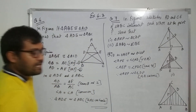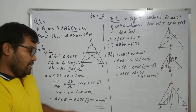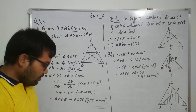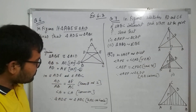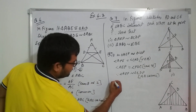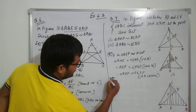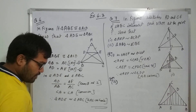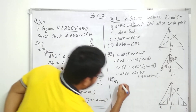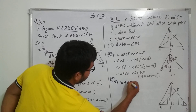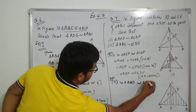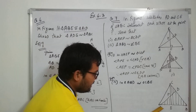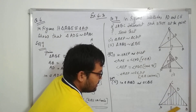I hope you have understood Roman numeral 1. For Roman numeral 2, I have already given the shaded regions as well. Now if you see triangle ABD and triangle CBE.